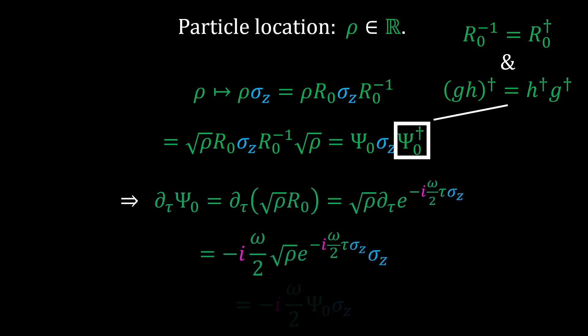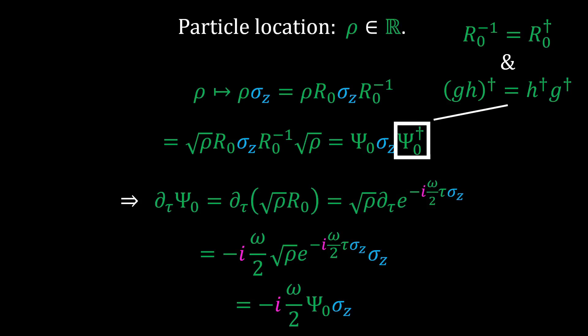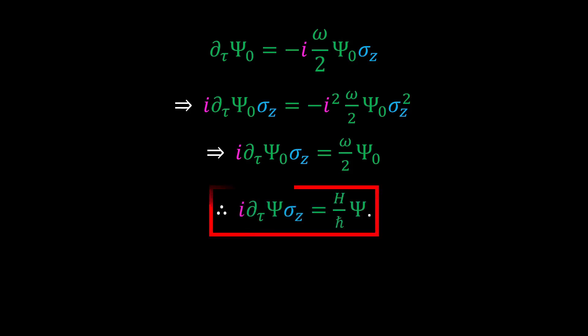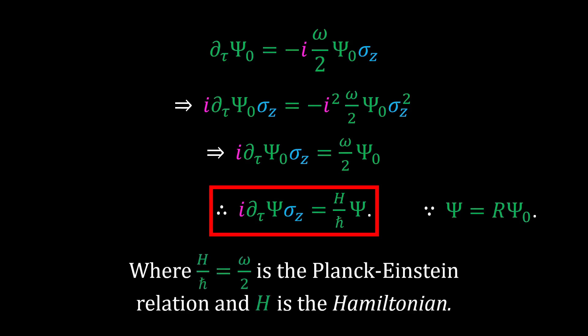The next step is to consider the change in proper time of the scaled spin pointer, psi-naught. We can then multiply by i on both sides and by sigma z on both sides, which puts this equation in nearly the final form. Finally, we rotate the pointer via the one-sided transformation in order to obtain a classical Pauli spinor, and we also invoke the Planck-Einstein relation. This gives us the Schrödinger equation in the geometric algebra of physical space.